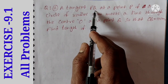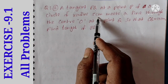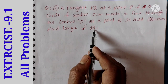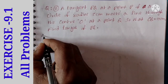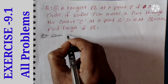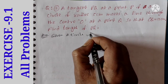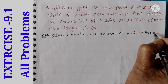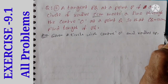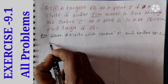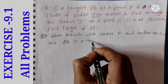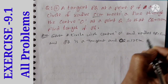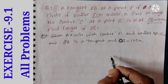Question number two: a tangent PQ at point P of a circle of radius 5 cm meets a line through the center O at point Q such that OQ is equal to 13 cm. Find the length of PQ. Given: a circle with center O, radius OP is equal to 5 cm, PQ is a tangent, and OQ is equal to 13 cm.